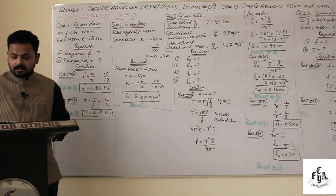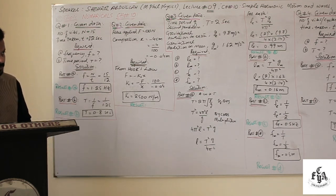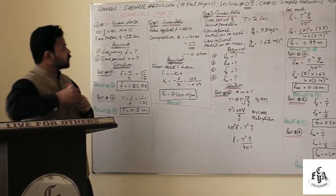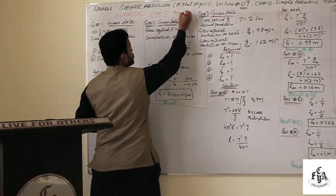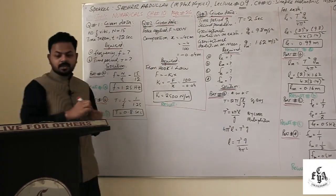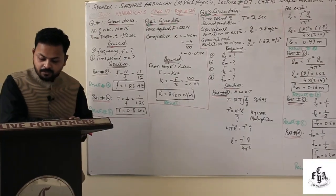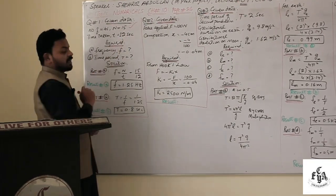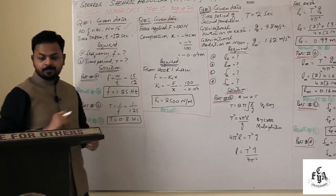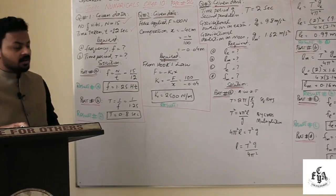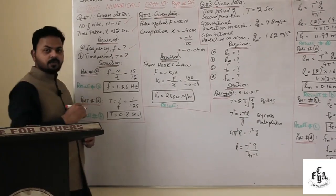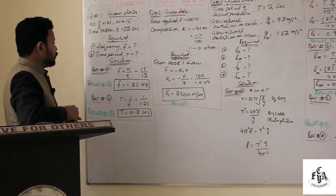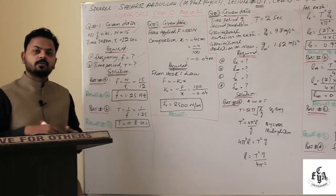The first numerical is available on page number 26. It says: a mass hung from a spring vibrates 15 times in 12 seconds, meaning the number of vibrations is 15 and the time is 12 seconds. Calculate the frequency and the time period of vibration. So we need to find both frequency and time period.